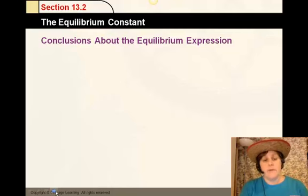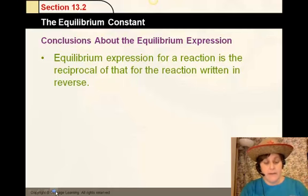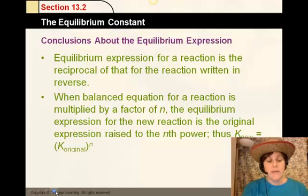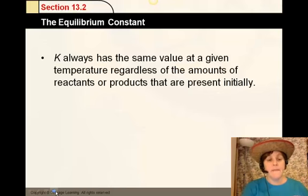What can we figure out about the equilibrium constant? The equilibrium expression for a reaction is the reciprocal of that for the reaction written in reverse. So if we see a reaction and we write it in a backwards direction, then it's the inverse of that, because it's always products over reactants. When the balanced equation is multiplied by a factor of n, the equilibrium expression for the new reaction is the original expression raised to the nth power. So if we double a reaction, it's going to be K to the n power, which in this case is 2. K values are usually written without units.